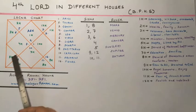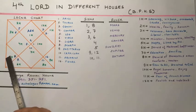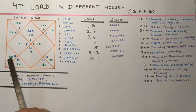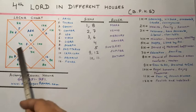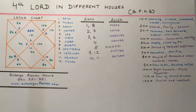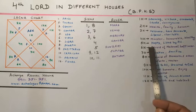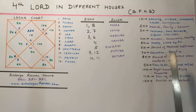If the 4th lord be placed in the 5th house, the native will be happy and liked by all. He will be devoted to Lord Vishnu, be virtuous, honourable, and will have self-earned wealth.